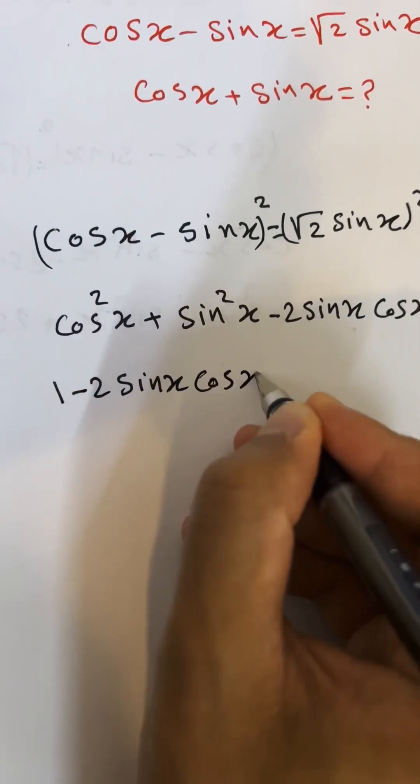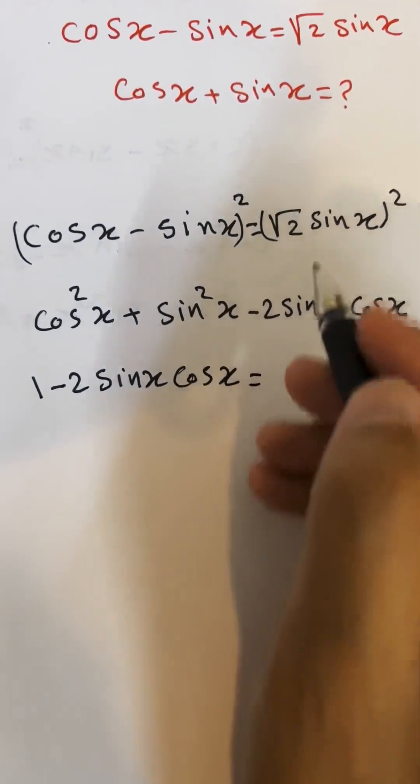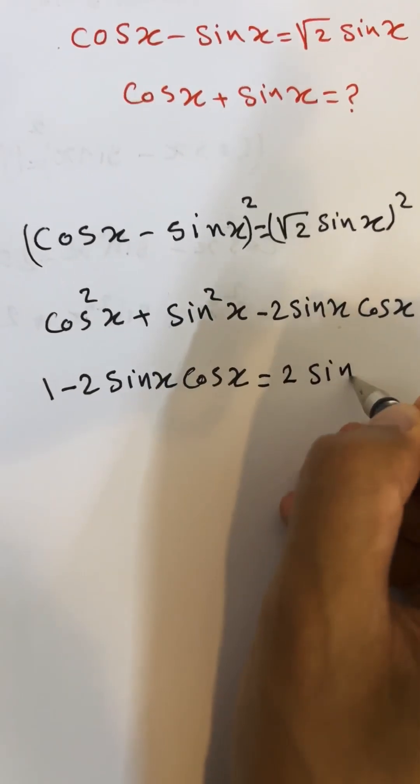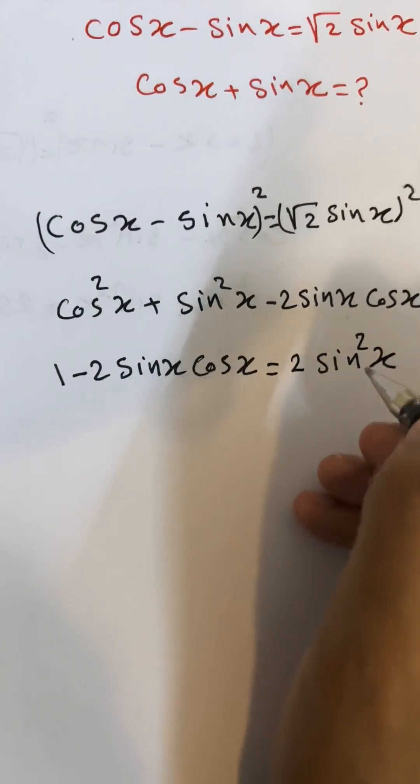When I square this one, it will be 2 sine squared x. Now try to arrange the terms.